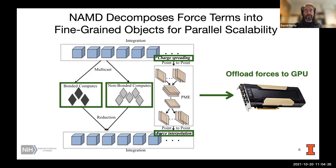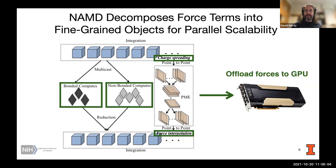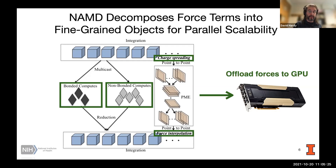The charge spreading and force interpolation parts of PME are highly localized and map well to the GPU. For really large parallel jobs, instead of standard fourth-order interpolation for PME, we use eighth-order interpolation, which puts more work into those localized phases. To maintain the same accuracy, we increase the grid spacing, giving one-eighth the grid points for the FFT. This effectively decreases the communication bandwidth needed for the 3D FFTs by a factor of one-eighth — a trick to support really large simulations.